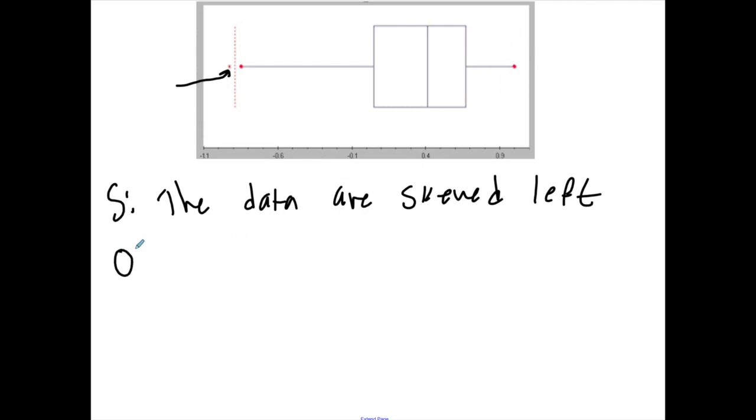All right, outliers. So this appears to be an outlier. Now this appears to be going up by 0.1 as far as I know, so it's about let's say negative 0.9. So there is one outlier: negative 0.9.